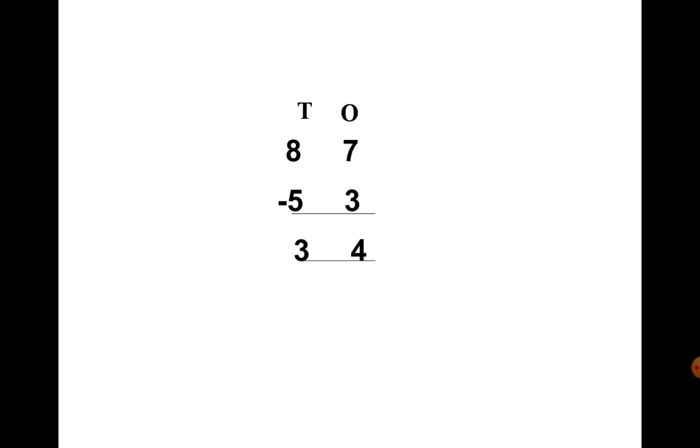Alright, let's do another one. How about 87 minus 53? Same way. First, subtract the right side ones. What is 7 minus 3? Yes, 4. We will write 4 under ones and now we will subtract tens. That is 8 minus 5. Yes, 3. We will write 3 under the tens column, and this makes 34 as the answer.